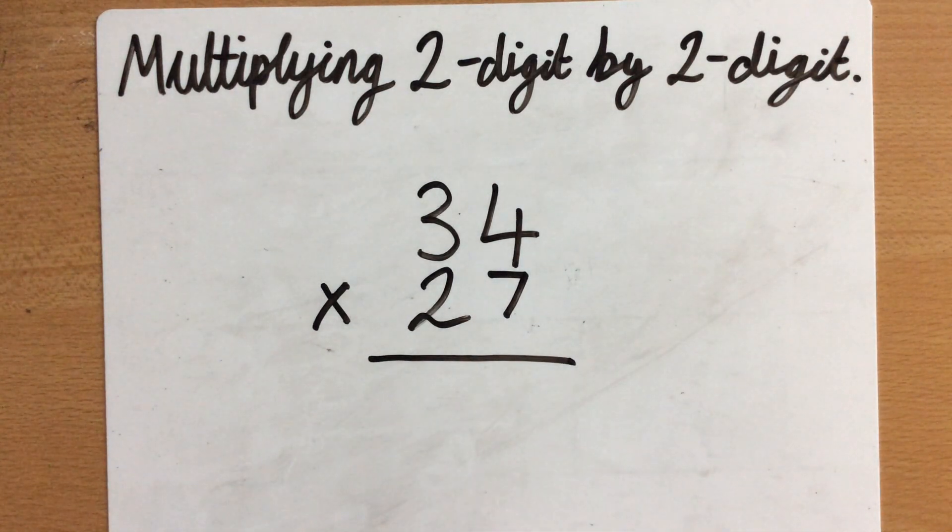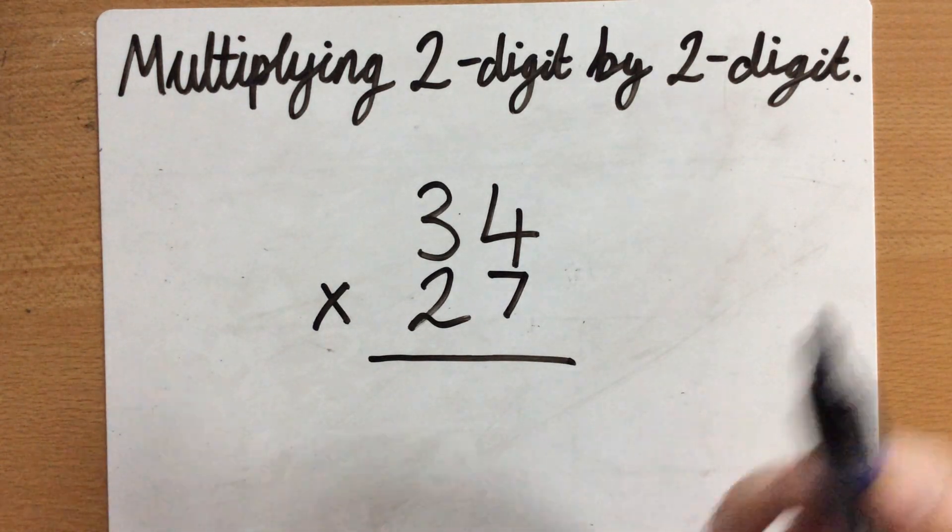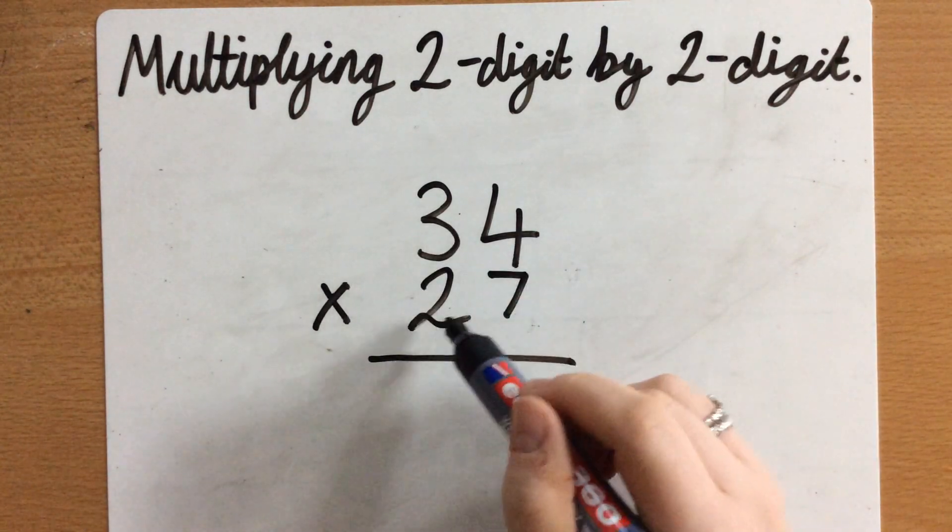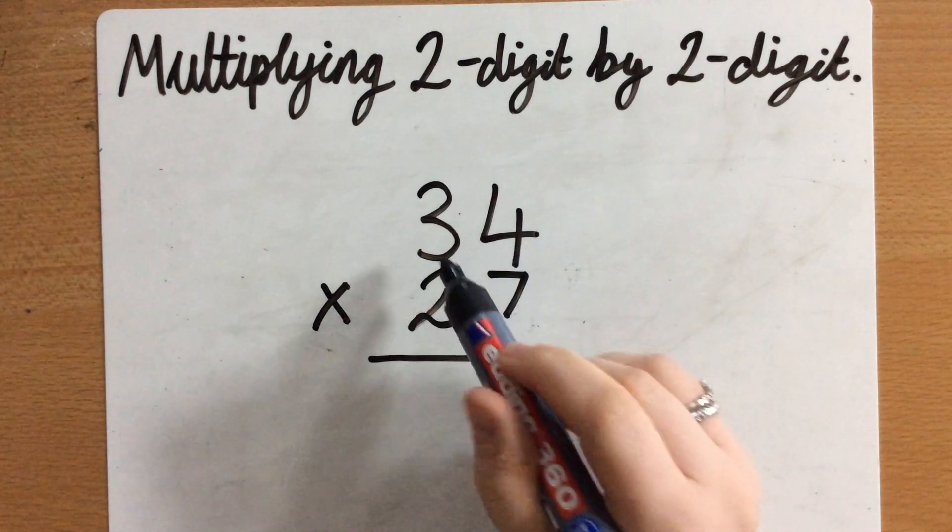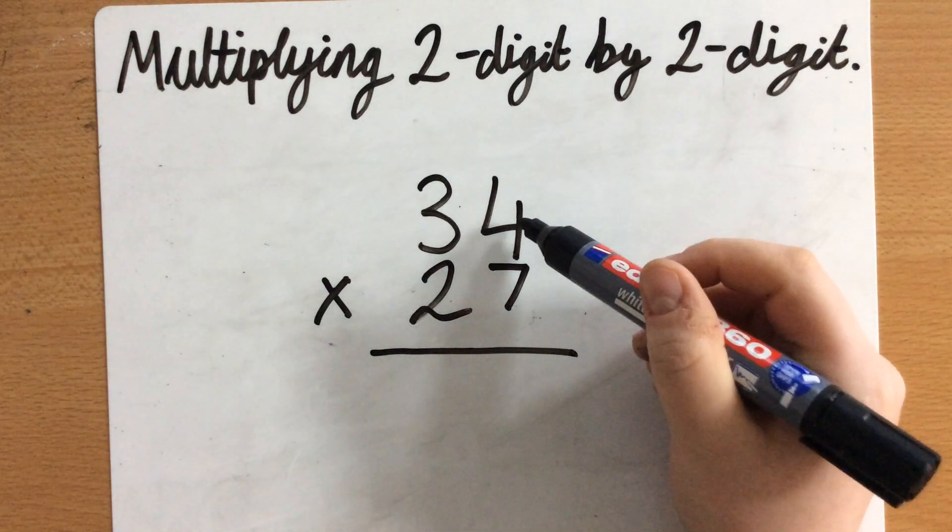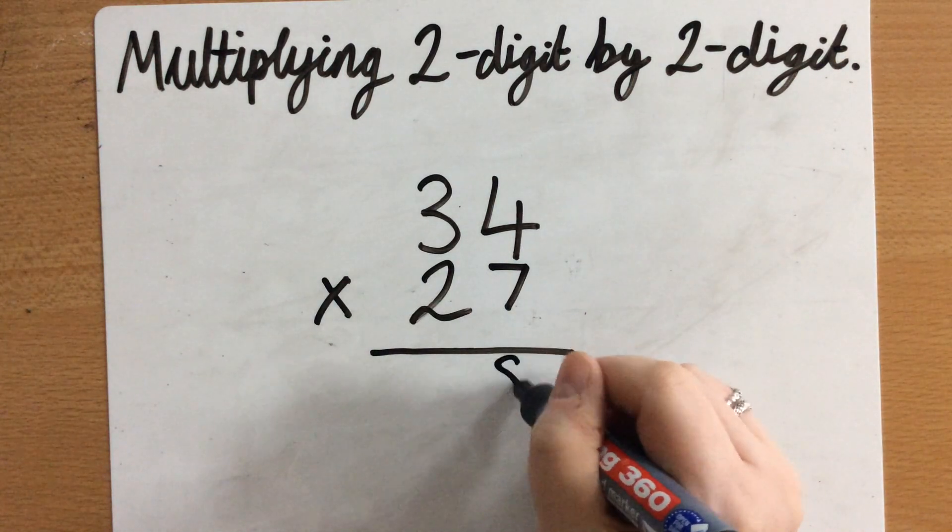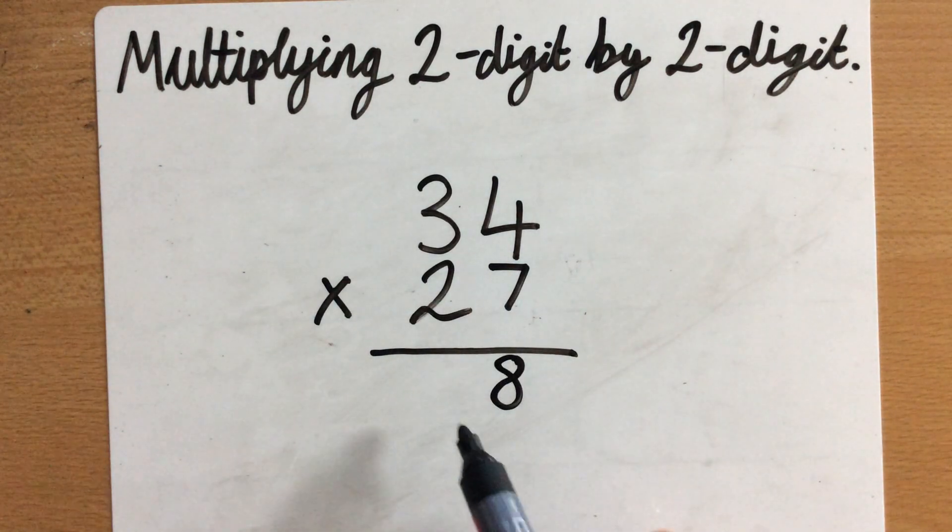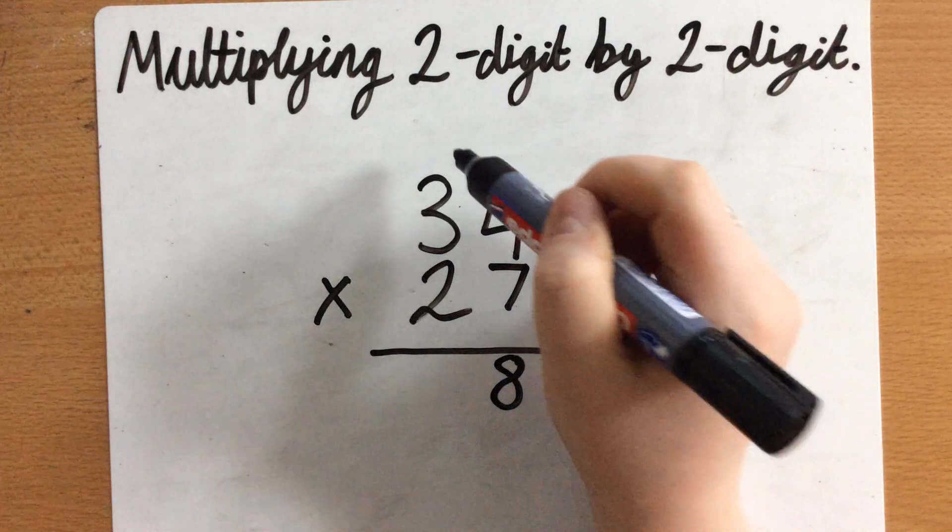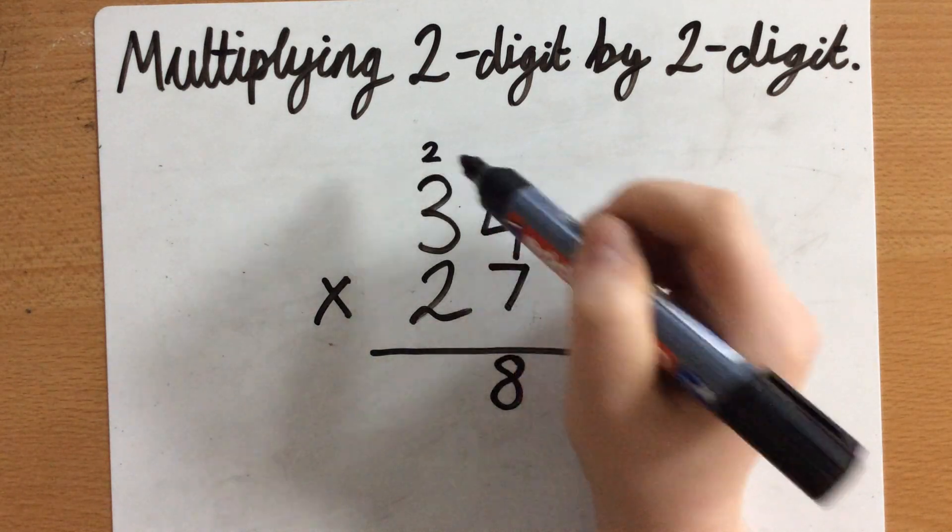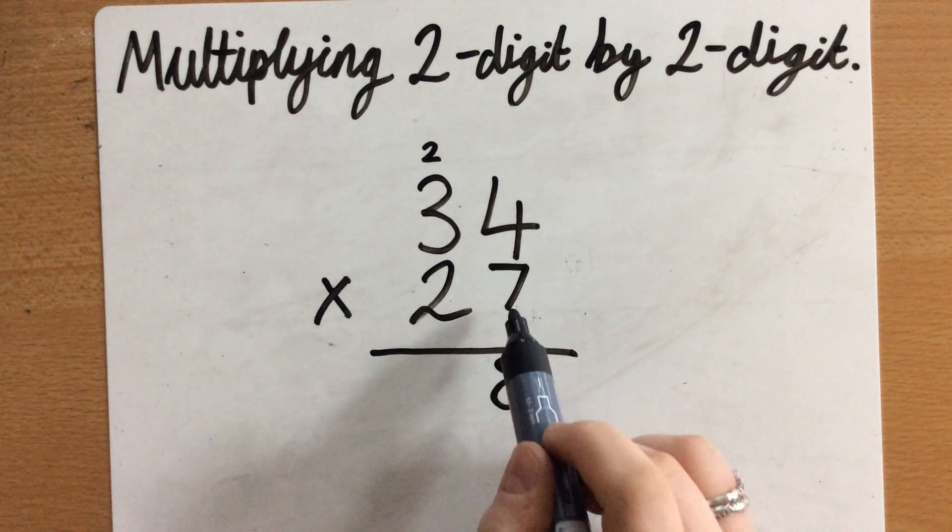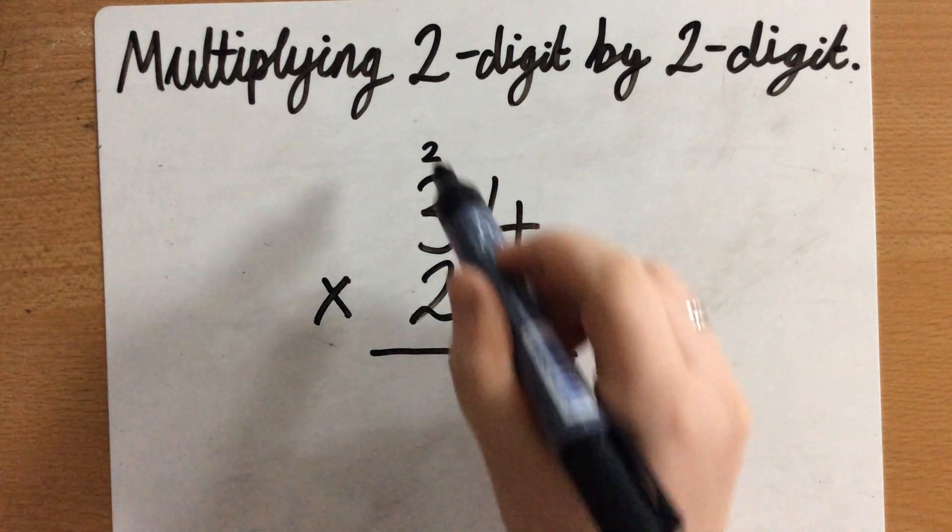So we always start with the ones column. So I need to first of all multiply the 7 by the 4 and then the 3, and then the 20 by the 4 and the 3 afterwards. So let's start with the 7 first. So 7 times 4 is 28. Now I can't put the 20 here because then my answer wouldn't make sense. I need to carry it over to the next column to add it on there ready for when I do 7 times 3.